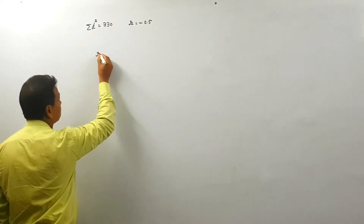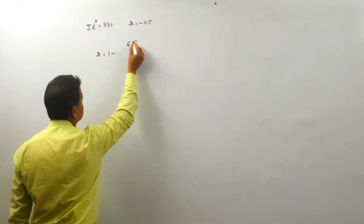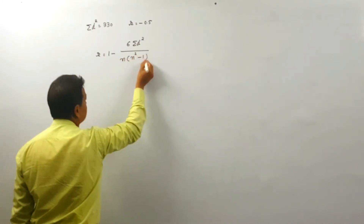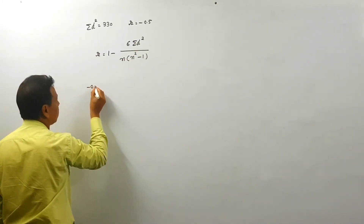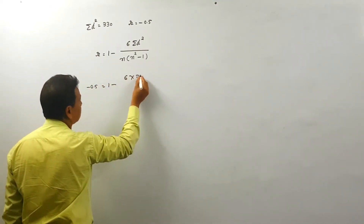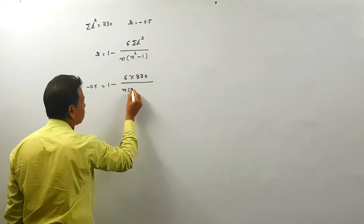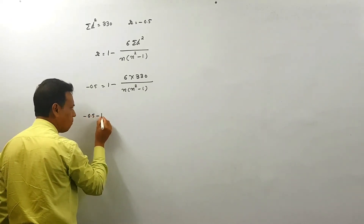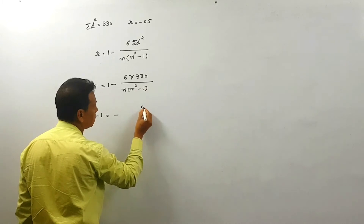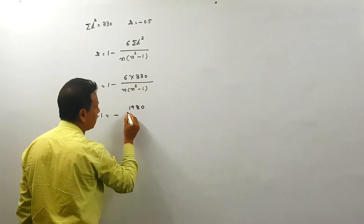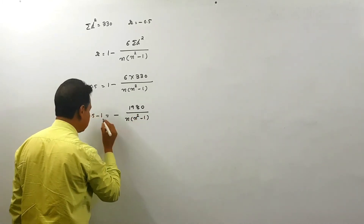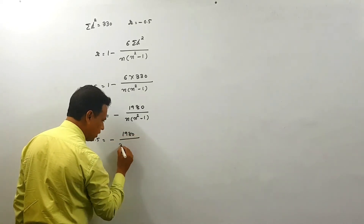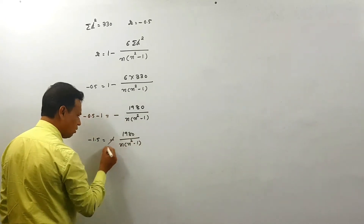So we use: r = 1 - [6 × Σd²] / [n(n² - 1)]. Substituting: -0.5 = 1 - [6 × 330] / [n(n² - 1)]. Moving 1 to the left side: -0.5 - 1 = -1980 / [n(n² - 1)], giving us -1.5 = -1980 / [n(n² - 1)].